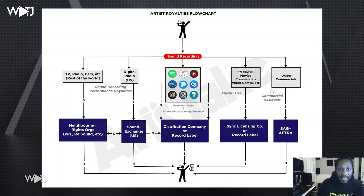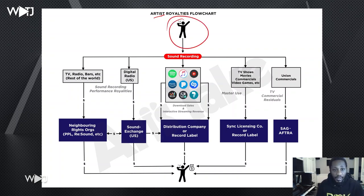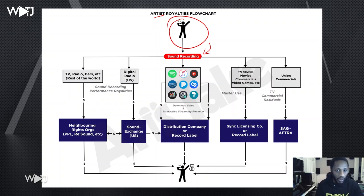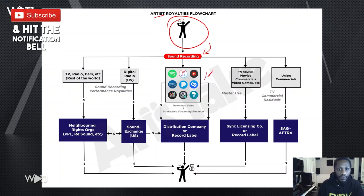We're looking at the artist royalty flowchart — this would be you as an artist. When you're an artist, you're going to create what's called a sound recording. Once you create that sound recording, it's a mixture of the instrumental, the lyrics, and putting all that together into a final recording. It's also called the master recording. Once you get done with that, you're going to put that out to streaming services.